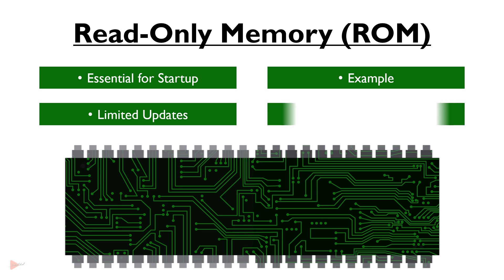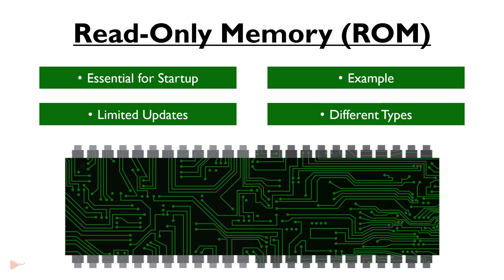Different types: There are various forms of ROM, each with its own characteristics. Some common types include mask ROM, PROM or programmable read-only memory, EPROM or erasable programmable read-only memory, and EEPROM.